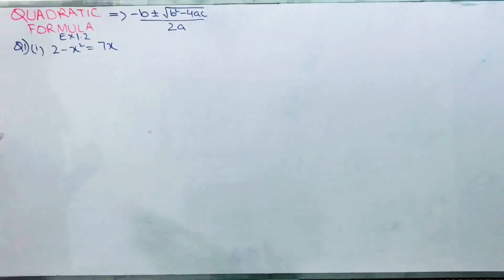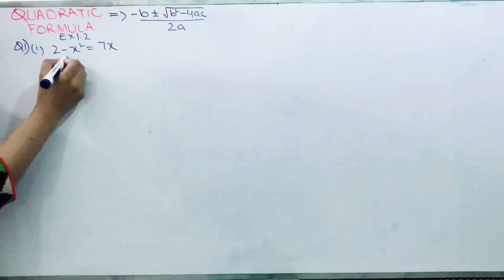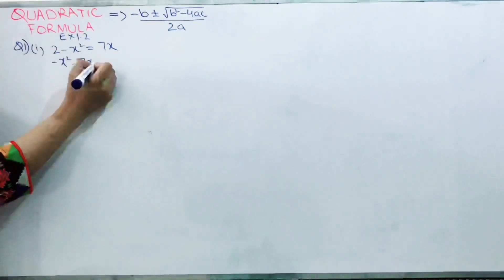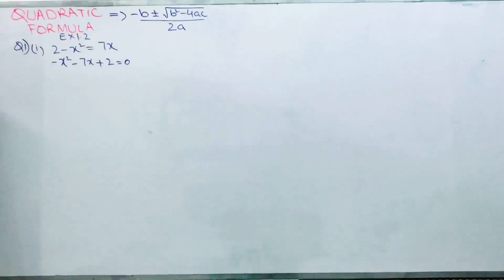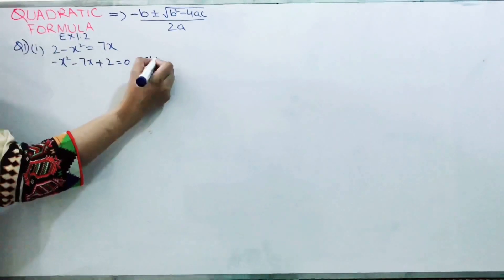This is your question and you have to solve using the quadratic formula. First step is to make it into standard form: minus x square minus 7x plus 2 equals 0. This is your standard form.